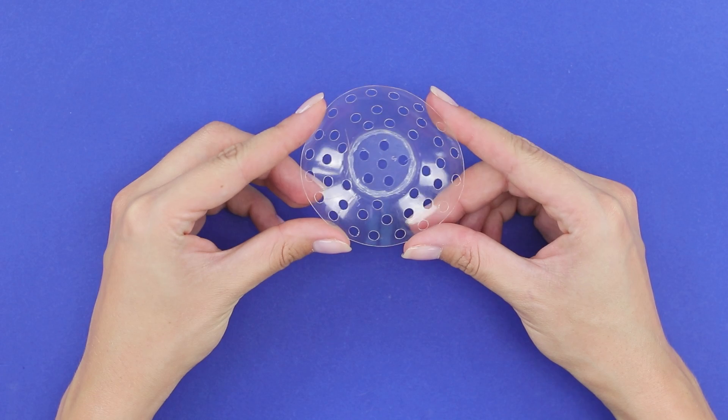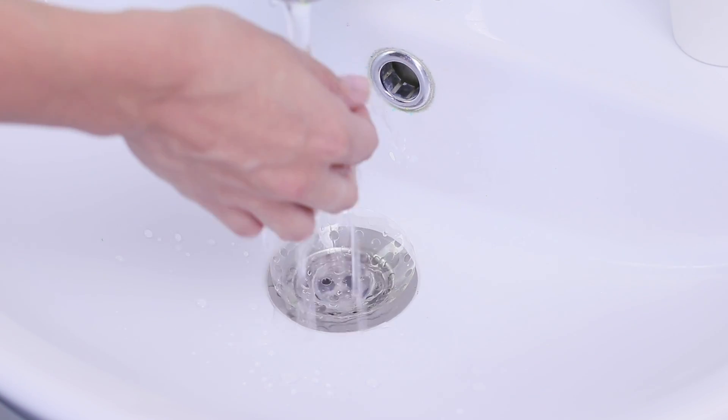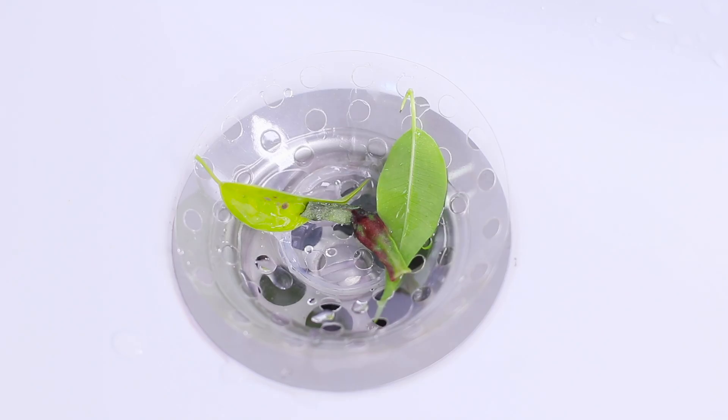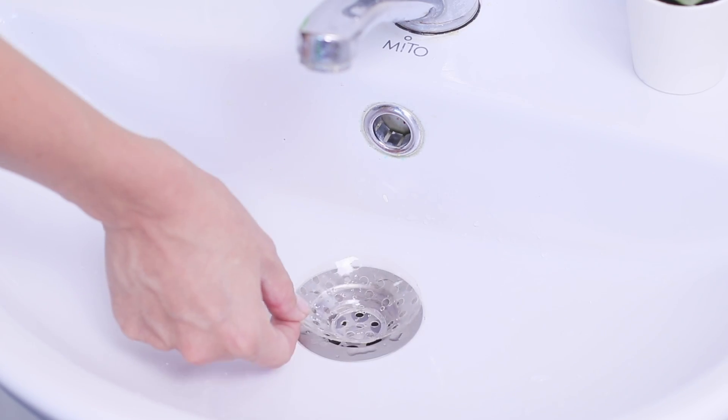What did you make? Guess! A sink net! This plastic filter will stop debris and the drain will stay clean. All that you need to do is to shake the trash from the net into the garbage can. It's that easy!